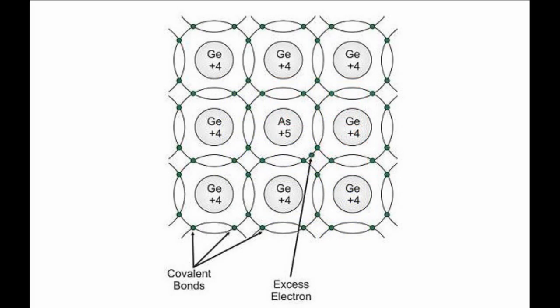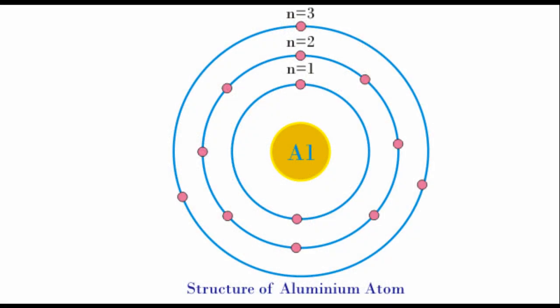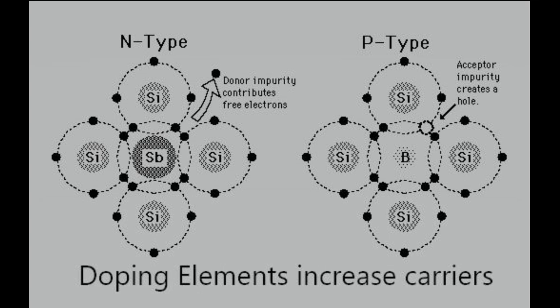Impurity atoms with three valence electrons produce P-type semiconductor material by producing extra holes or electron deficiencies. Aluminum, for instance, is a good dopant to produce P-type material out of either silicon or germanium. N-type material has extra electrons over the intrinsic material, while P-type has extra holes. This adds to the energy level of the material. When you put these two together, you form a band gap between the P and the N.